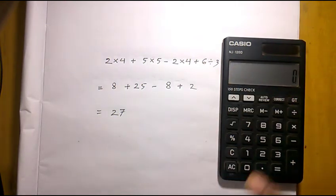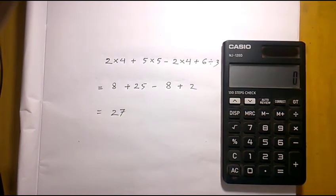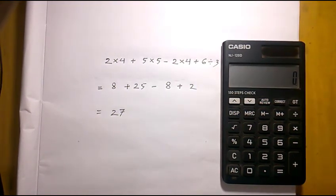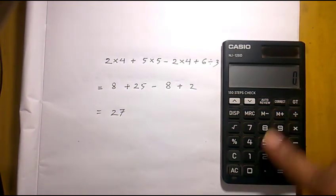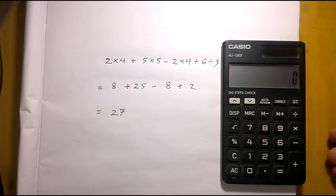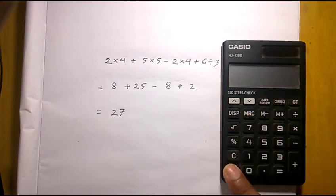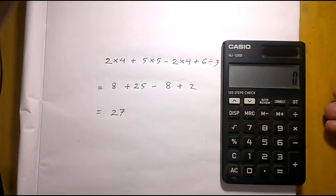To sum up, M+ is used to add value with the existing memory. M- is used to deduct value with the existing memory. And MRC is used to see the memory, and if you press MRC twice, the previous saved value would be removed. I think it will help you. Thank you.